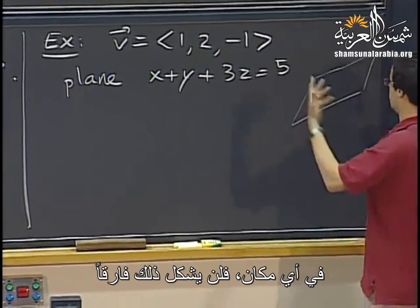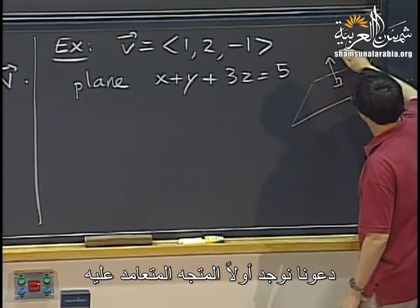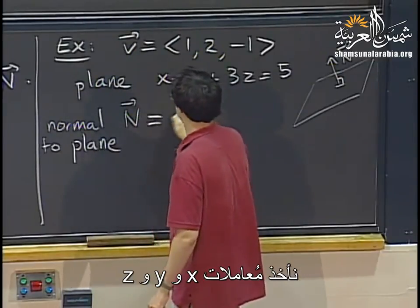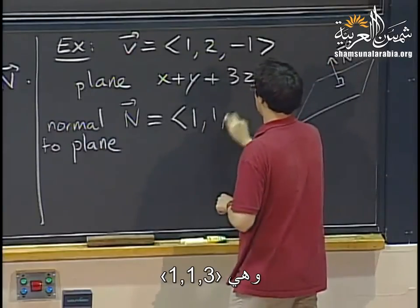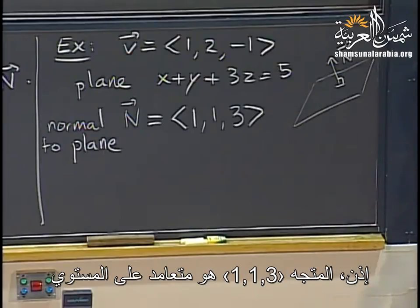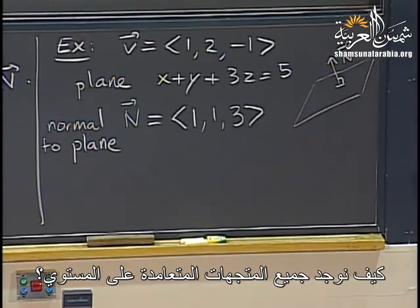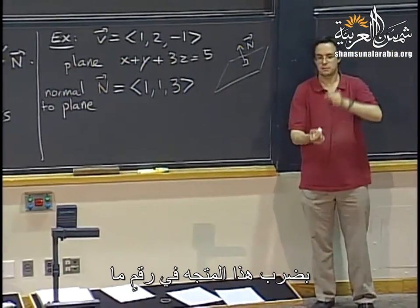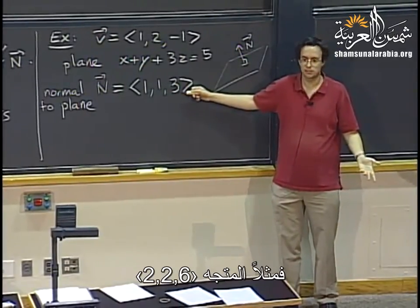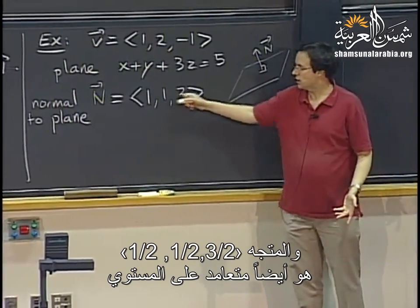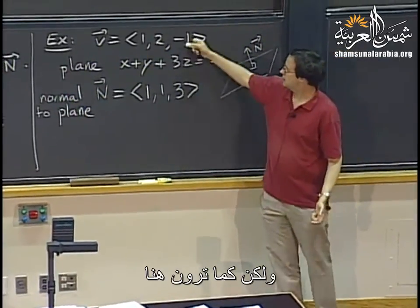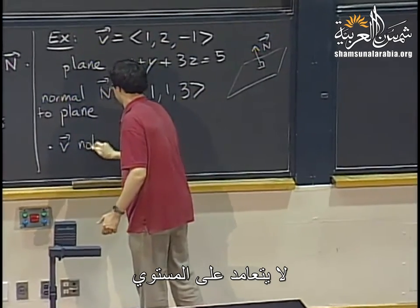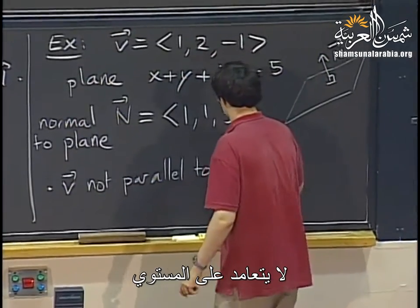To get a normal vector to the plane x plus y plus 3z equals 5, we take the coefficients of x, y, and z: that is 1, 1, 3. So 1, 1, 3 is perpendicular to the plane. All perpendicular vectors are parallel to each other, obtained by multiplying this vector by some number — for example, 2, 2, 6 or 1/2, 1/2, 3/2 are also perpendicular to the plane. But v equals 1, 2, negative 1 is not proportional to 1, 1, 3, so v is not perpendicular to the plane.